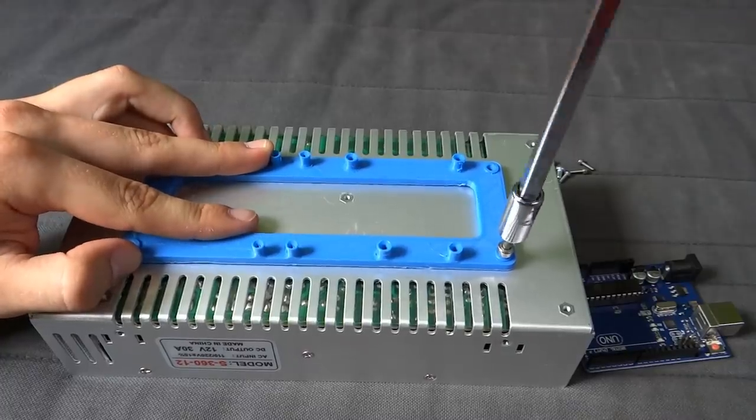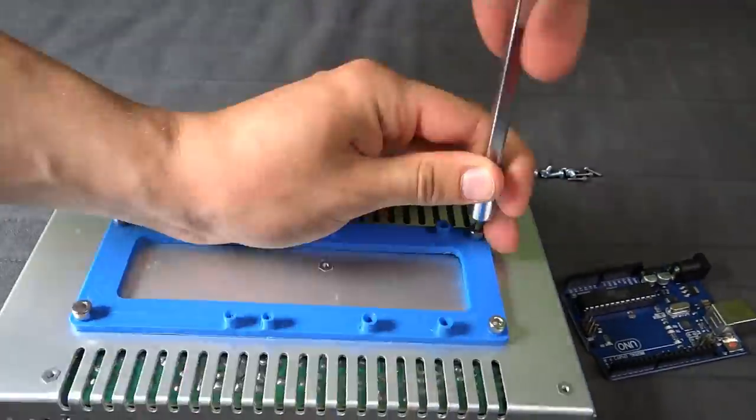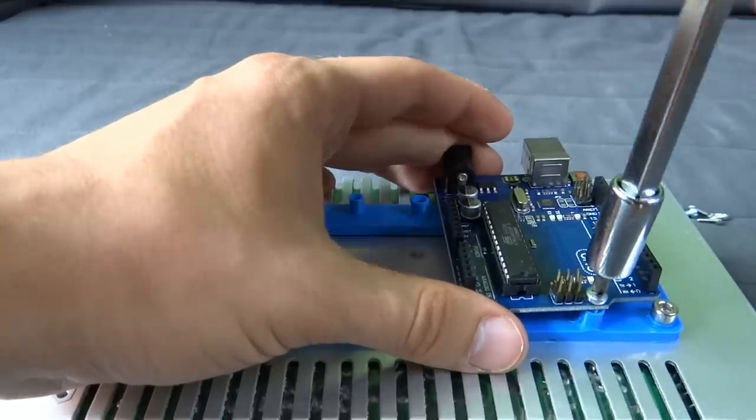Tighten 3D printed part with screws to the power supply, and then tighten Arduino and relay to it.